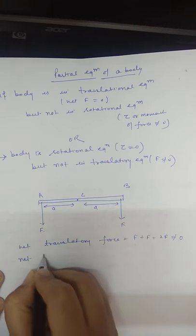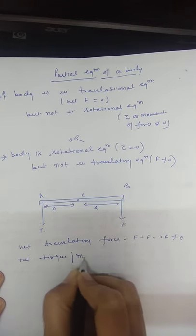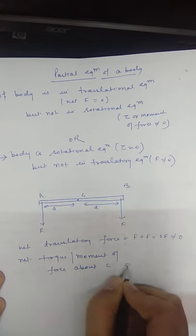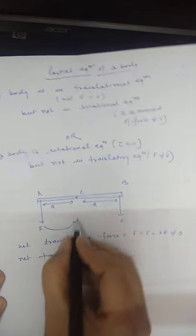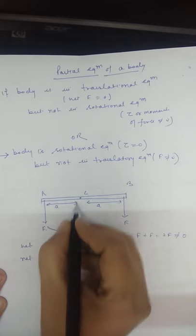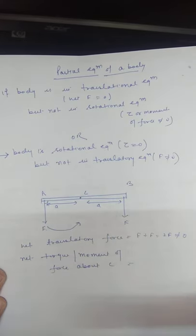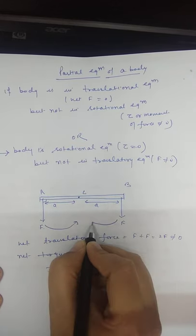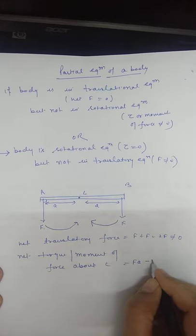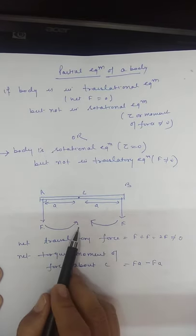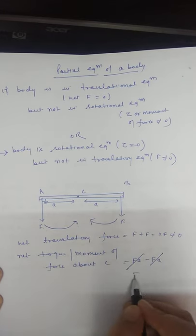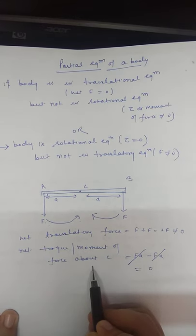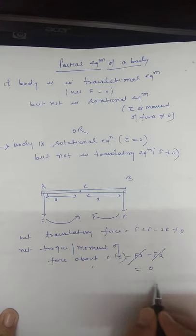What is the net torque or moment of force about point C? The torque due to each force is F × A × sin90°. One force produces an anti-clockwise torque (positive) and the other produces a clockwise torque (negative), giving FA − FA = 0. So the rod is in rotational equilibrium because the net torque acting is zero.